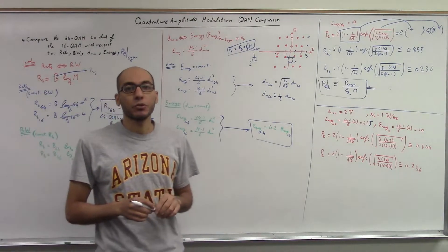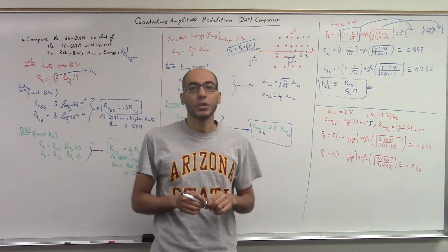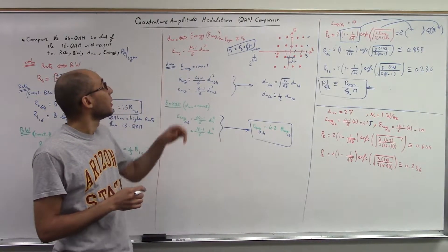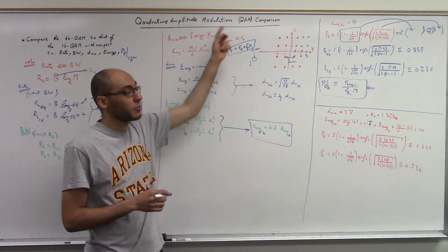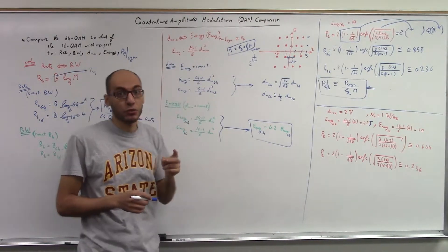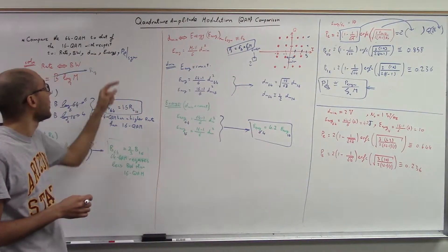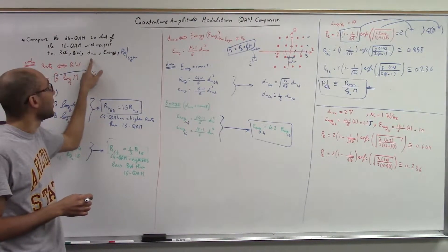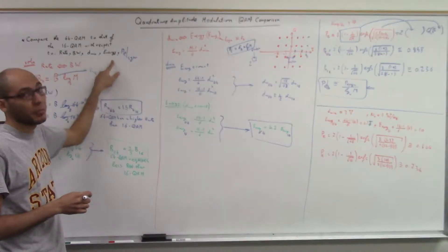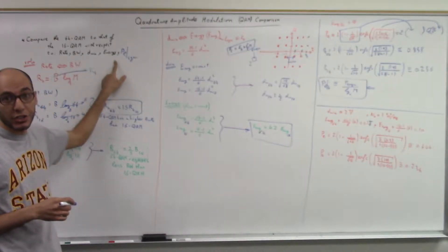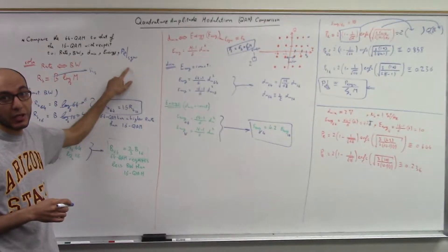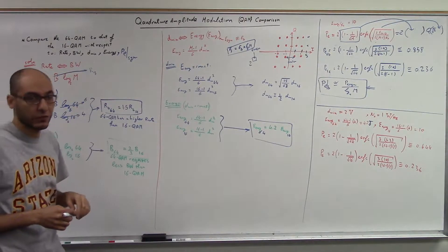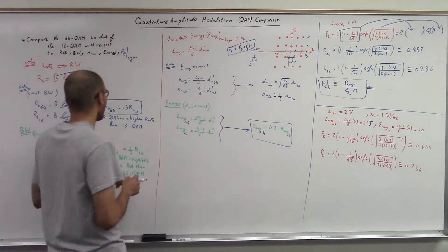Hello everyone. In this video we're going to discuss how to compare quadrature amplitude modulation schemes with respect to the rate, the bandwidth, the d minimum, the energy average per symbol, and the symbol probability of error.